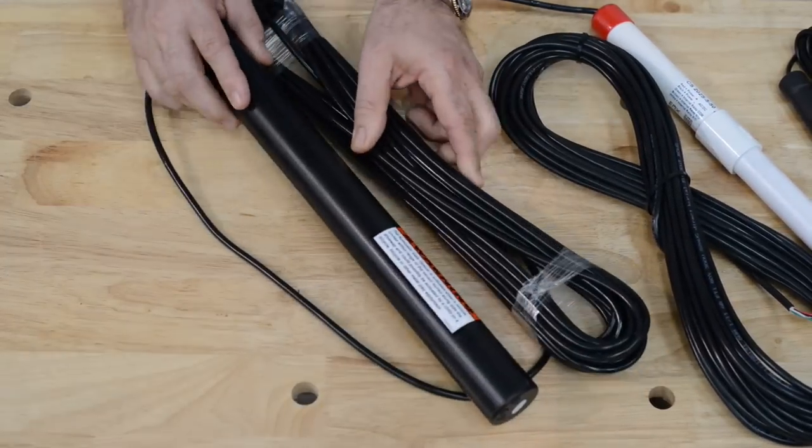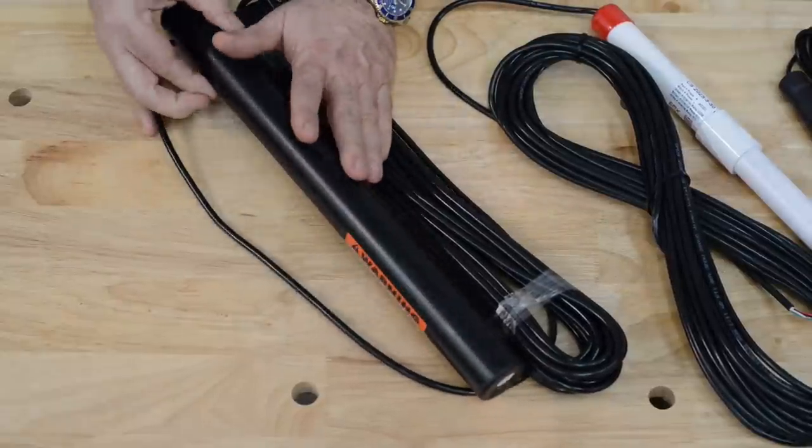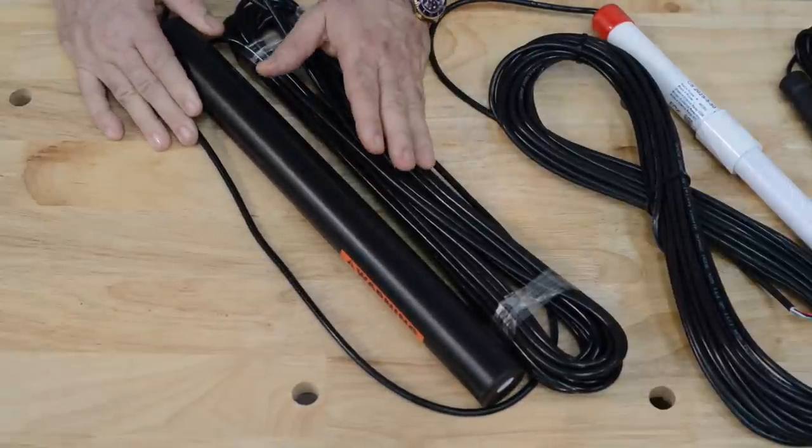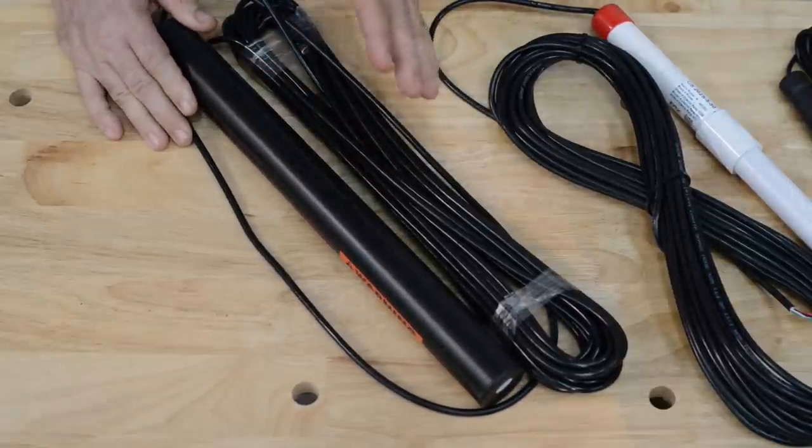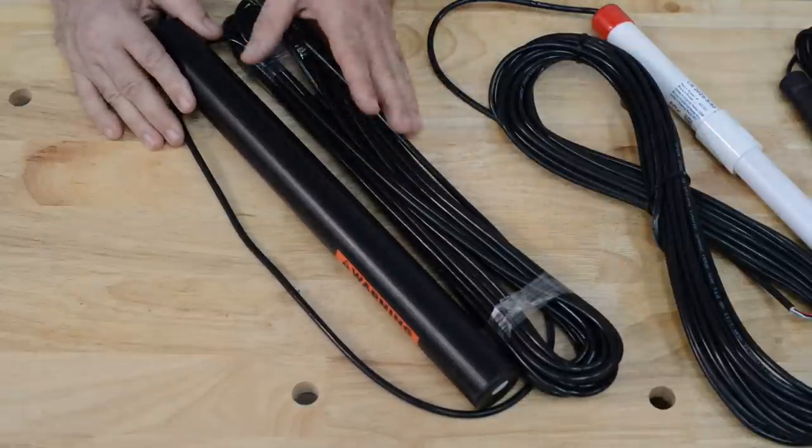This is the GTO exit wand. They work about the same. I recommend this when it's being hooked up to a GTO gate opener. Just to avoid problems when you're dealing with GTO tech support. Because, the moment they hear there's a different product hooked up to theirs...